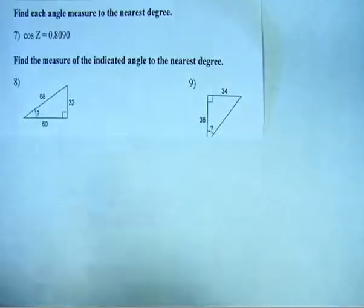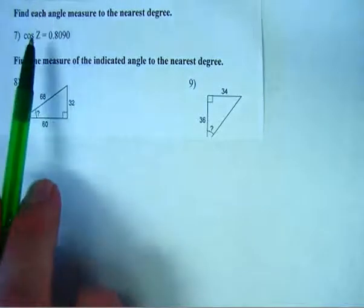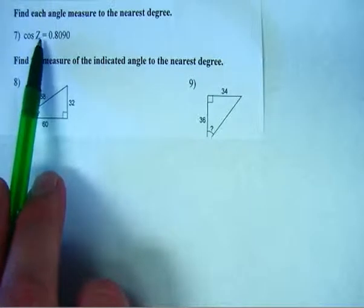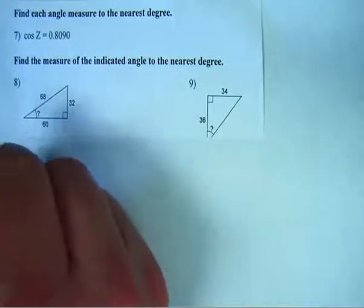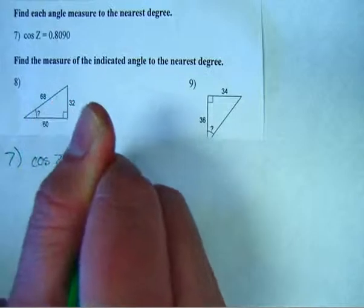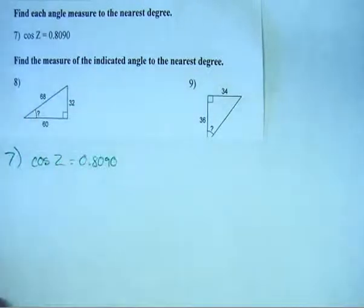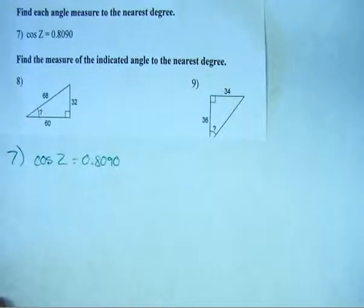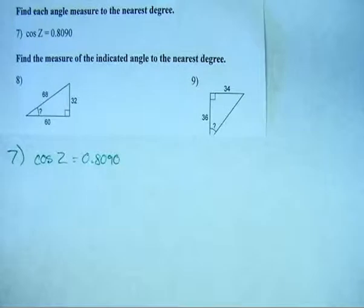So for the first one of these, we're trying to find what z is if the cosine of z equals 0.8090. And now I'm going to do this in two ways here. First, I'm going to show you the proper mathematical way, and then I'll show you the quick and dirty way that you will most likely end up using.